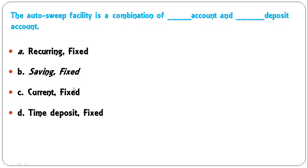The auto sweep facility is a combination of which two account types — recurring and fixed, saving and fixed, current and fixed, or time deposit and fixed? The correct answer is saving and fixed deposit. You get the advantage of both: when your saving account balance exceeds a certain limit, the excess money automatically moves to a linked fixed deposit account, earning higher interest on that portion. B is the correct answer.